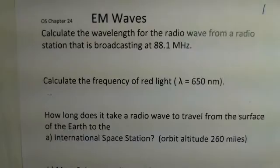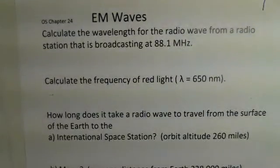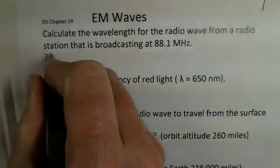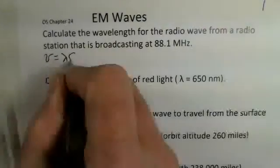We'd like to start here by considering wavelength for a radio wave. We have a selected frequency here, 88.1 megahertz. How do we find the wavelength? Well, for all waves, we have a relationship that the speed of the wave is wavelength times frequency.